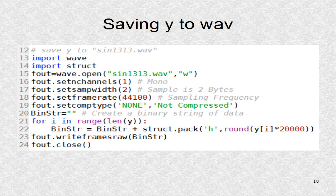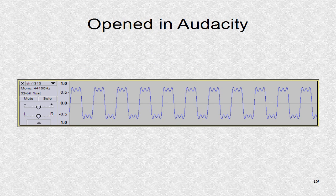This is the second half of the program sin 1313py which is on pythonaudio.blogspot.com. Below this slide, we use the wave module to write a wave file. We need to enter four parameters, line 16 through 19. For line 16, we can put one for mono and two for stereo. A large binary string is created using the packing function, and it is written out using the write frames raw function. Then the file is closed, that is written.